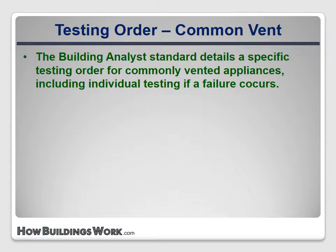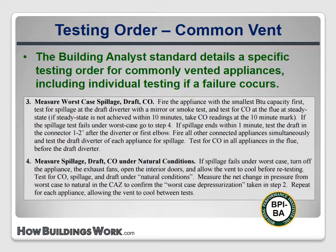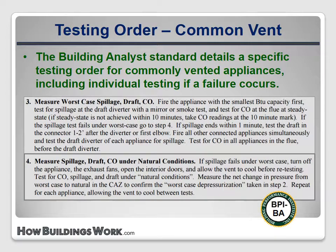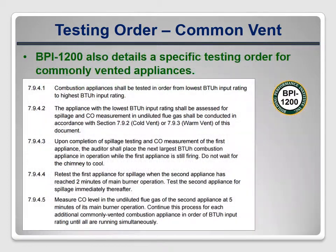The Building Analyst Standard details a specific testing order when multiple appliances share a vent: the smallest appliance should be tested first, then others in order of BTU rating leaving smaller appliances running. If any appliance fails, all should be retested alone under natural conditions, allowing the flue to cool between tests. BPI 1200 states that all appliances should be fired in order of increasing BTU per hour input capacity, and that larger appliances should be tested with all smaller appliances operating simultaneously. There is no requirement to ever test the appliances independently, even if a failure occurs.